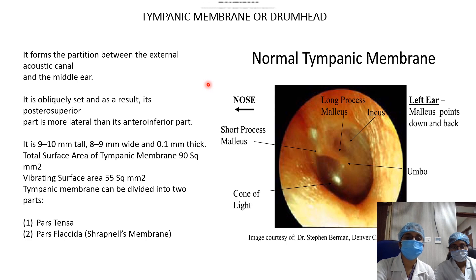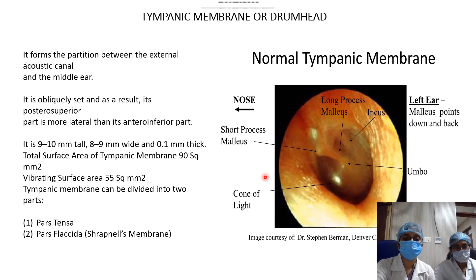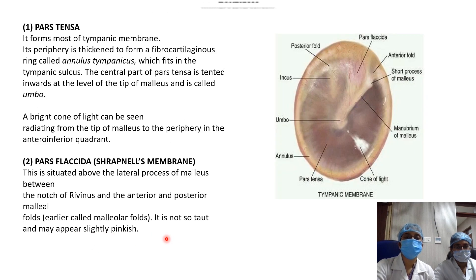The tympanic membrane is the partition between the external acoustic canal and the middle ear. It is obliquely set — the posterosuperior part is more lateral than the anteroinferior part. It is 9–10 mm tall, 8–9 mm wide, and 0.1 mm thick. The total surface area is 90 square millimeters and the vibrating surface is 55 square millimeters. The pars flaccida is also known as Shrapnell's membrane.